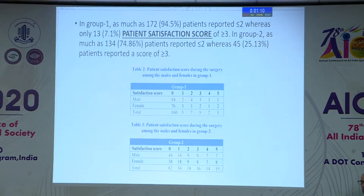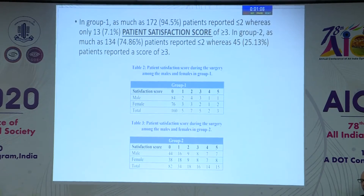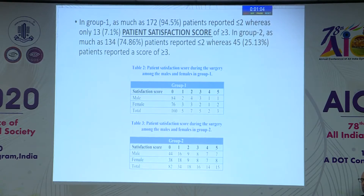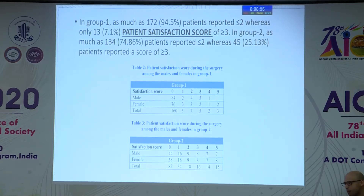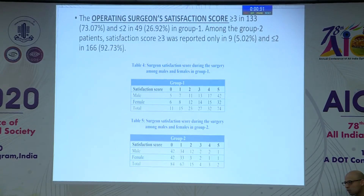In group one, as many as 172 patients reported a pain score of less than two, whereas only 13 patients scored three or more. In group two, 134 patients reported a score of two or less, whereas 45 patients reported a score of three or more, indicating higher pain in the topical anesthesia group.